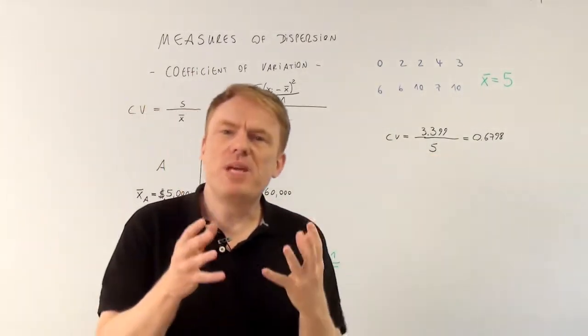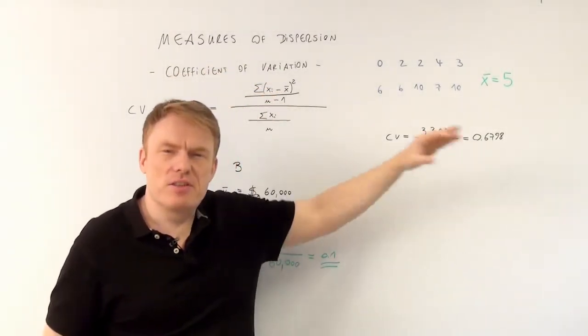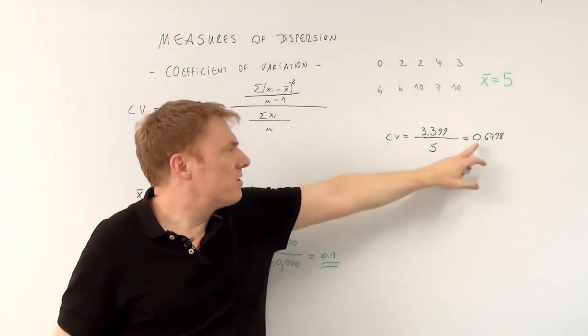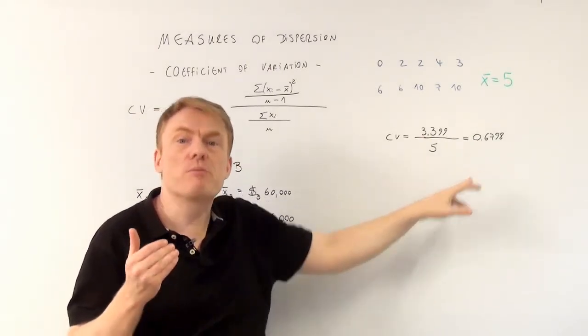So what's the meaning of the coefficient of variation? This number indicates that the standard deviation is around 68% of the arithmetic mean.